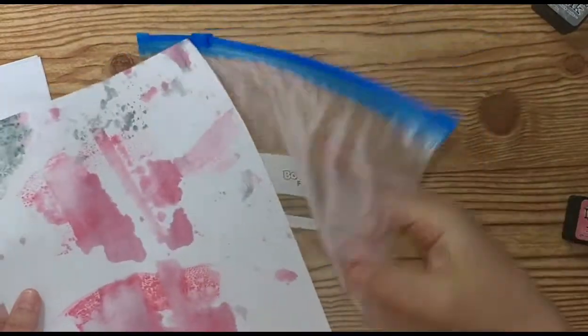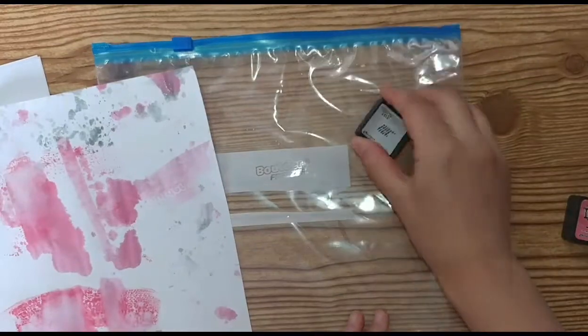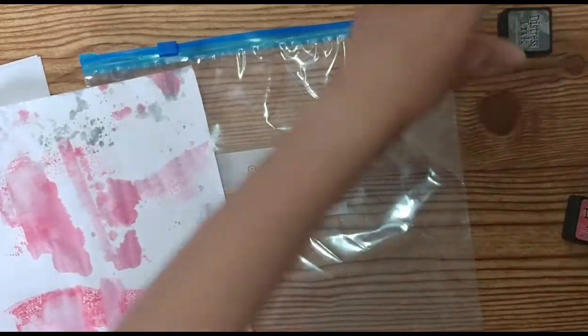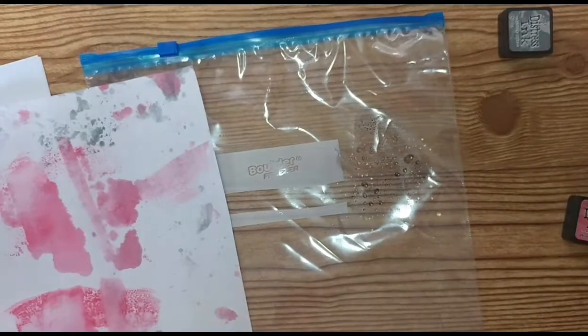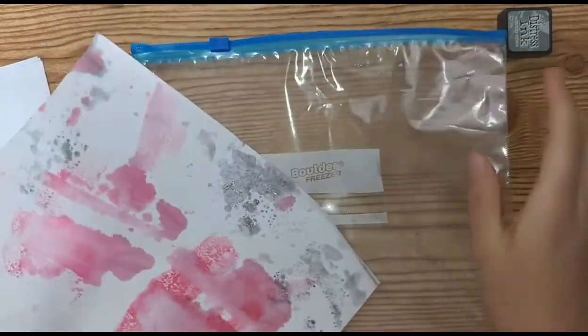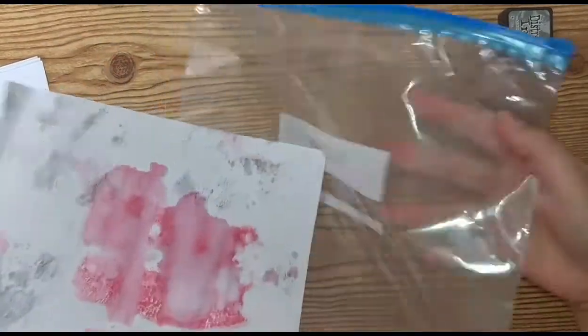And I chose some really bright and bold colors for this paper because I really want it to stand out. But you could definitely do it more subdued if you use the distress colors like tea dye or vintage photo or wilted violet. Some of them that are very subdued, but I was going for a bright and happy Paris look. So that's what I'm doing here.